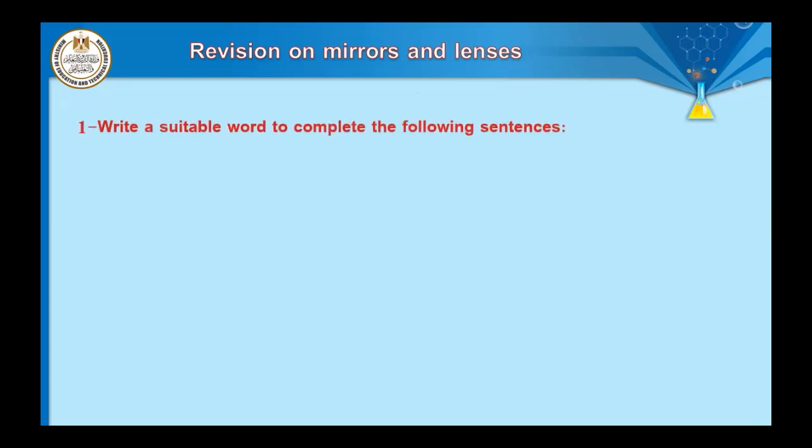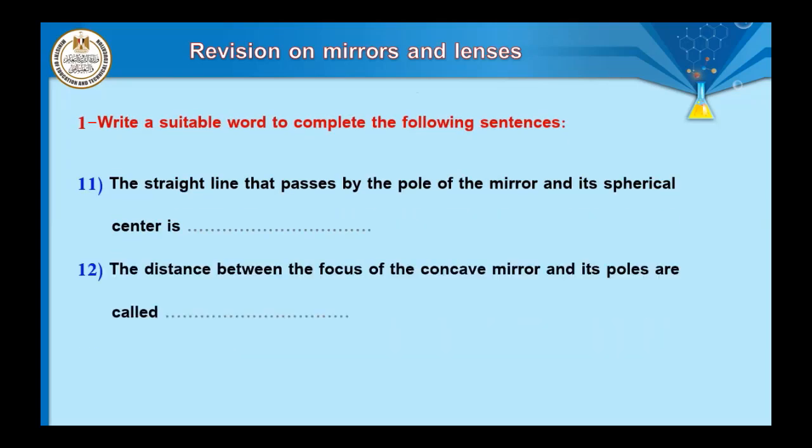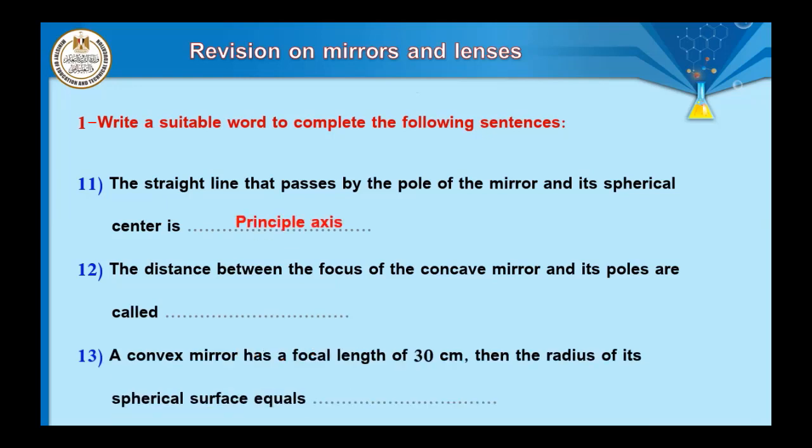Question number eleven: write a suitable word to complete the following sentence. The straight line that passes by the pole of the mirror and its spherical center is called ___. It is the straight line that passes by two points — the pole and the center of curvature. That is called the principal axis.